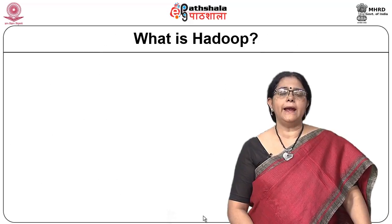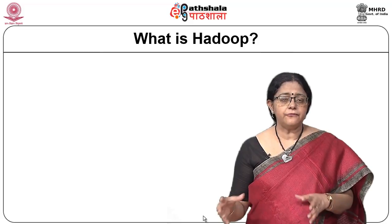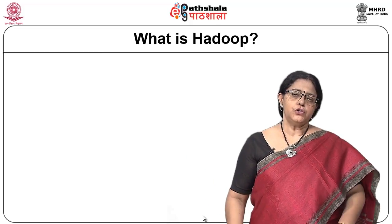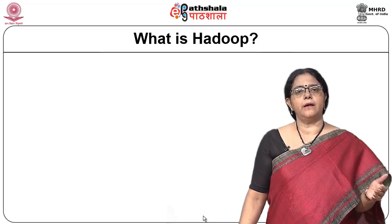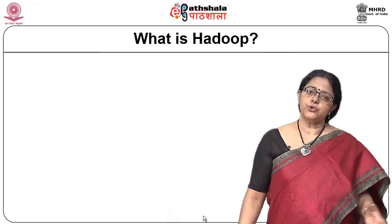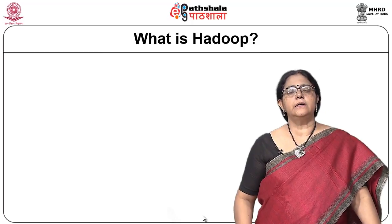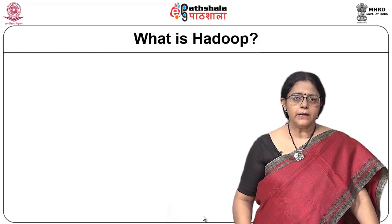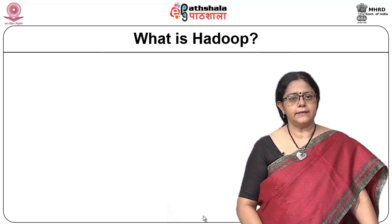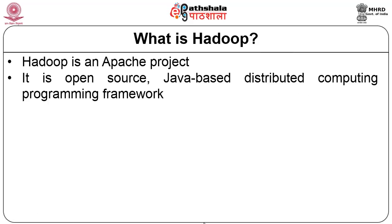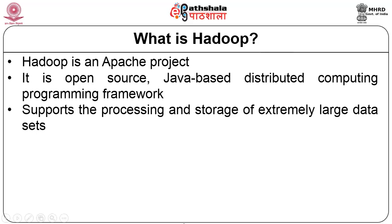This is a basic problem of using commodity machines. What is required is a platform or framework that will take care of these failures. In the foreground, processing alone will run; in the background, failures should be taken care of. The framework should ensure all machines are running in parallel and giving the overall result. The framework we are talking about is called Hadoop — an Apache framework for doing big data analytics.